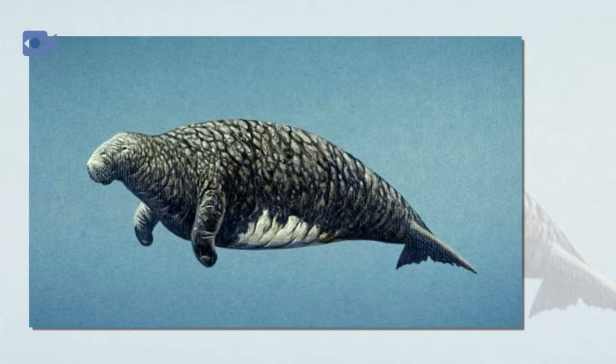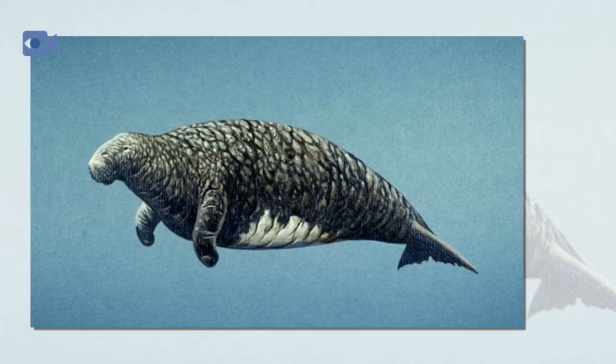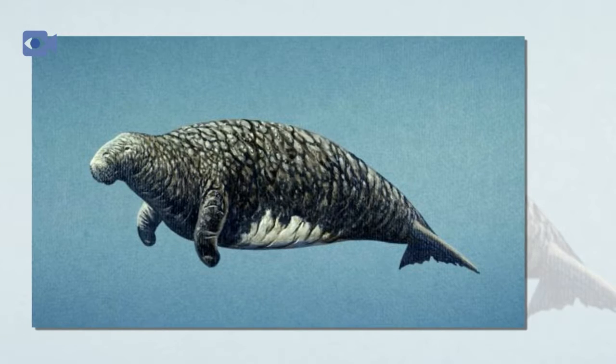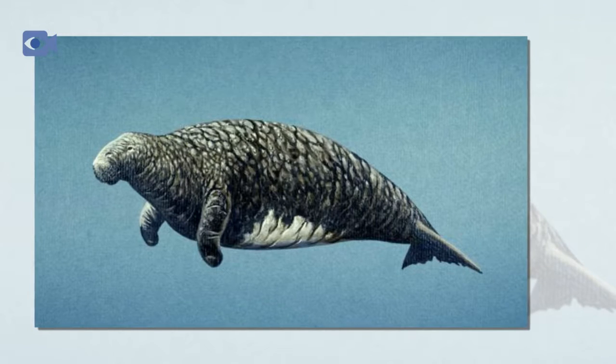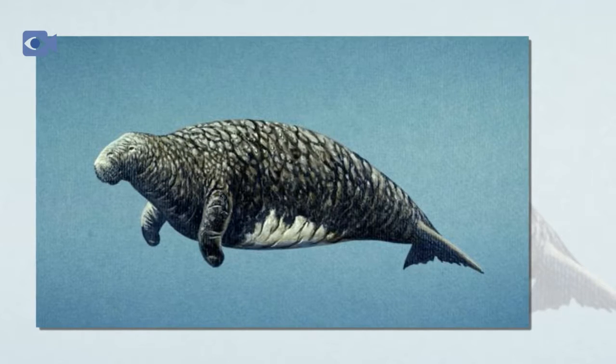Steller's sea cows were large herbivores that had a seal-like appearance with a tail which resembled that of a whale. The Steller's sea cow was named after George Steller, who discovered the animal and described it.